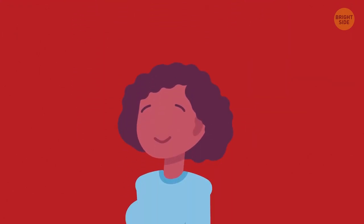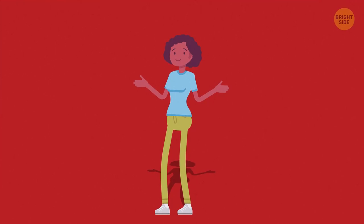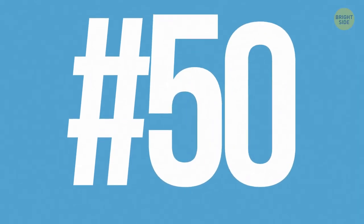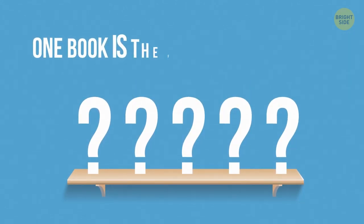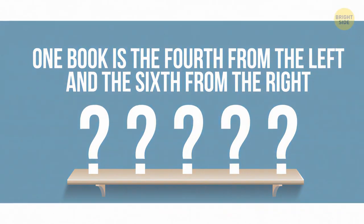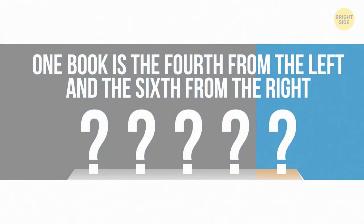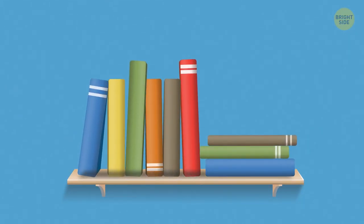49. Everyone has me, but no one can lose me. What am I? A shadow. 50. There are several books on a bookshelf. One book is the fourth from the left and the sixth from the right. How many books are there on the shelf? There are nine books. So there.